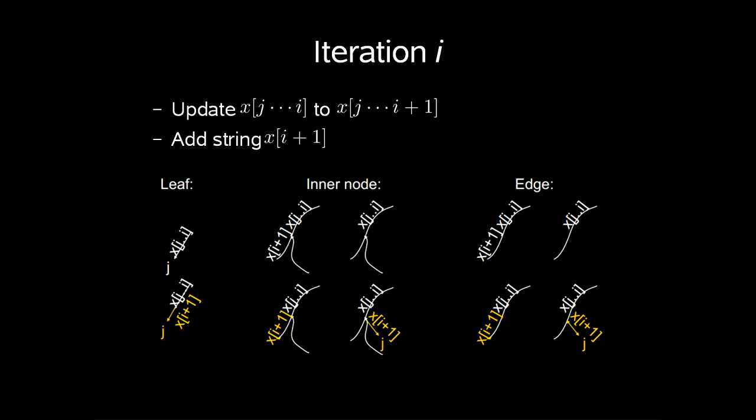If we land on an edge, we have the same, that x[i+1] already is contained on the edge, or we have to branch to make a new child.